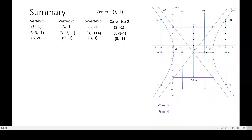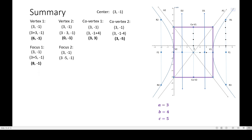For the foci, we recall the value of c which was 5. We use c, or 5 units, to locate focus 1 and focus 2, starting from the center. Since this is horizontal movement we change x — moving 5 units right for focus 1 and 5 units left for focus 2. So we add 5 or subtract 5 from the x coordinate, giving us (8, -1) for focus 1 and (-2, -1) for focus 2.